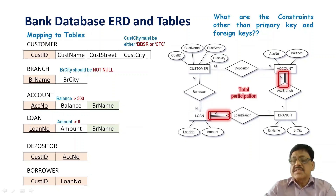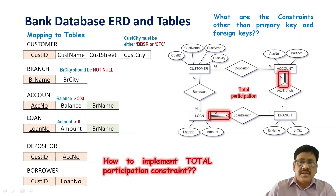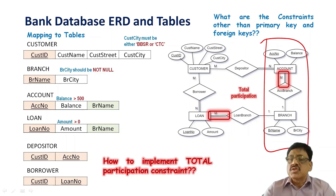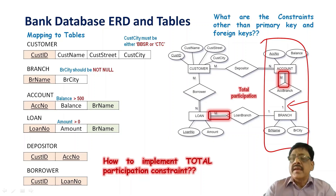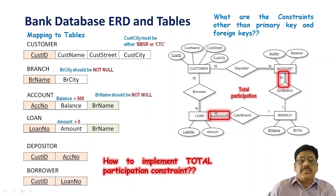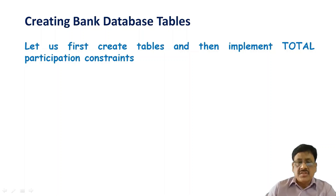There is also total participation in the binary many-to-one relationships — that is account to branch as well as loan to branch. These are total participation. The question is how to implement total participation. A branch can have many accounts and all accounts must belong to a branch — that is total participation. All accounts must belong to the branch, and that can be implemented by making the foreign key in account as not null. So we make branch name in account as not null. Similarly in the loan, branch name should be not null. We implement the total participation constraint through the ALTER TABLE command.